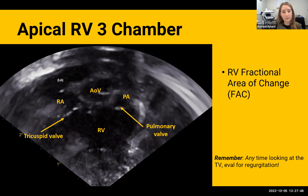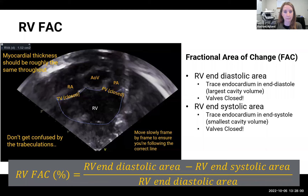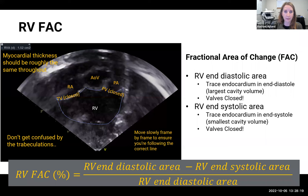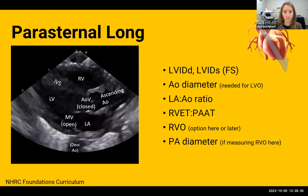Moving into the RV three-chamber view, this is probably a more unique view to hemodynamics but really focuses on and exposes a broad part of the RV. We use this view to obtain RV fractional area of change, one of several measures we use for RV function including TAPSE and RV S-prime. To obtain the FAC, trace the RV cavity tightly at end-diastole and end-systole, similar to what you do for Simpson's biplane. In the RV there can often be trabeculations along the bottom — ignore those and tightly follow the RV border and trace along and around the valve.